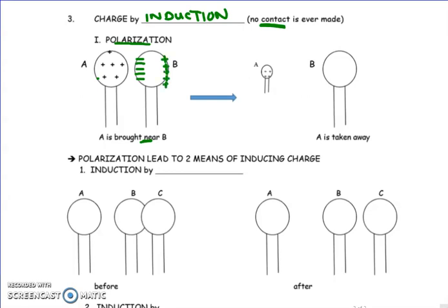So if the positive comes near, what it's going to do is it's going to pull the negatives to the left side, leaving the right side positive. I'm going to show equal amounts. So I haven't charged B, but I've polarized it. And that's really important. So if I move A away, what happens to B? It goes back to what I was showing before. Those charges come back together, and they're evenly distributed throughout.